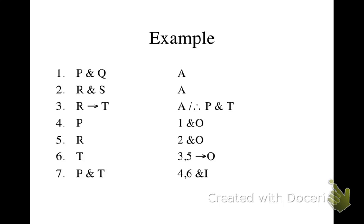Well, if we have R arrow T, and if we know that R arrow T is true, and we know that R is true, then we know that T is true. So we can get T on line six.